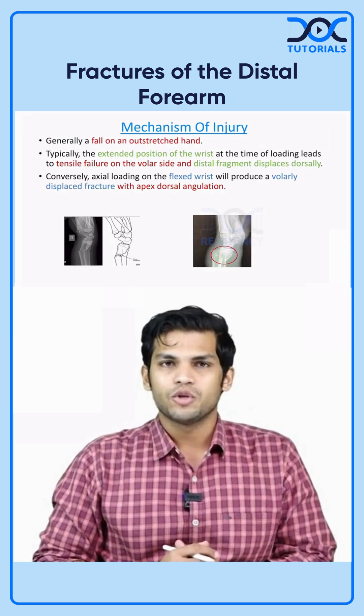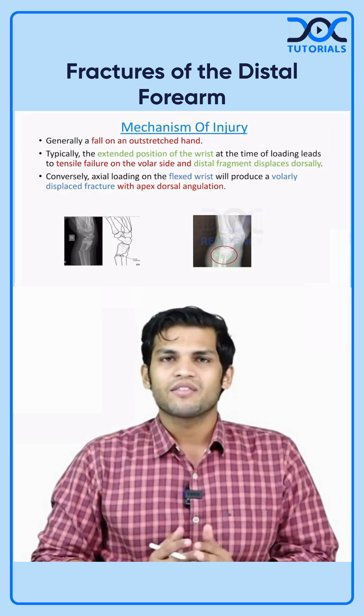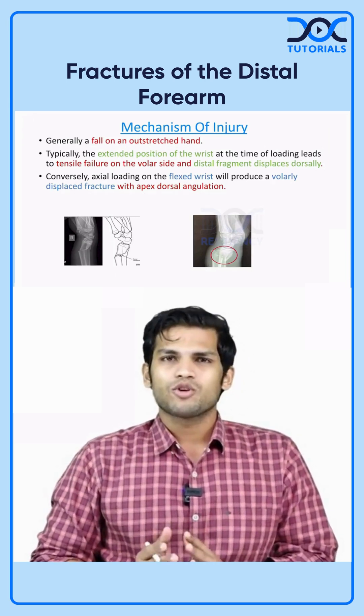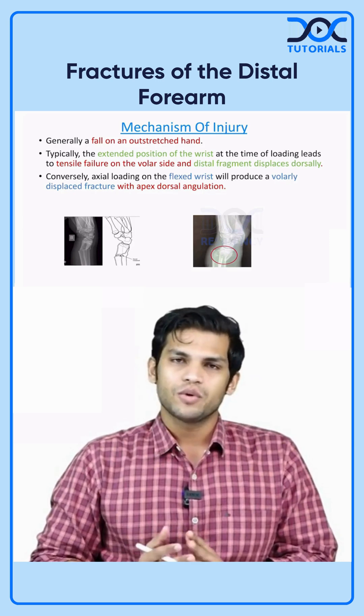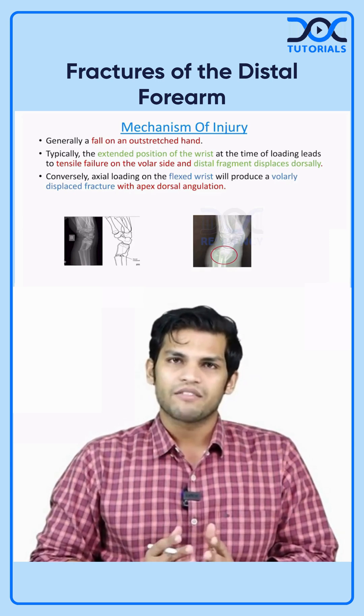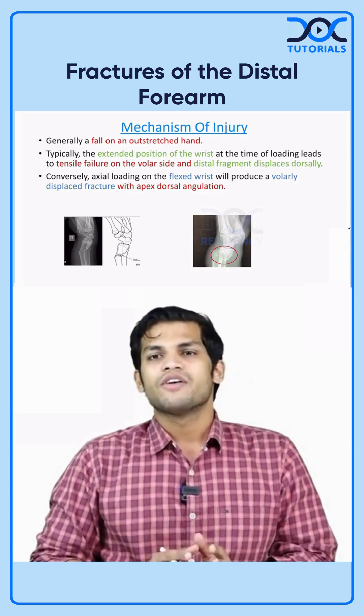Now coming to the mechanism of injuries of the distal radius as well as ulna. In case of ulna, the most common cause of injury is direct trauma or fall which will lead to a straightforward transverse or an oblique ulnar fracture or a comminuted ulnar fracture.